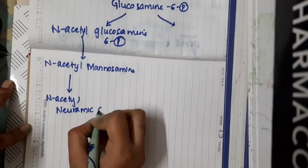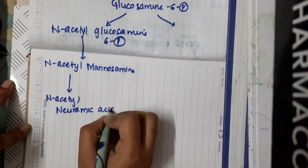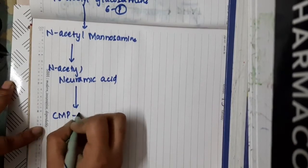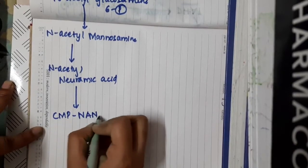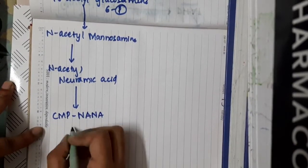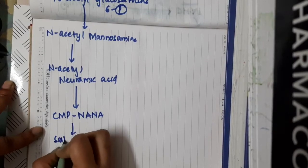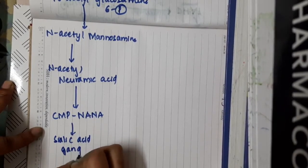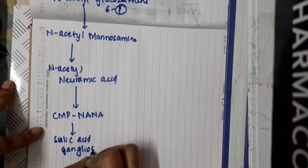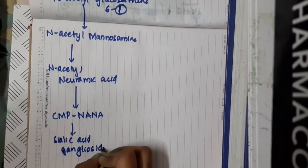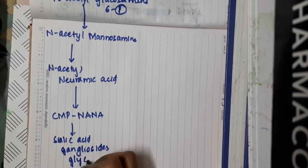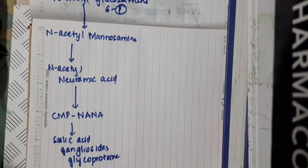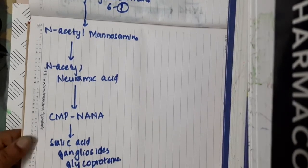This N-acetylneuraminic acid combines with CTP to form CMP-N-acetylneuraminic acid, which finally forms sialic acid, gangliosides, and glycoproteins.